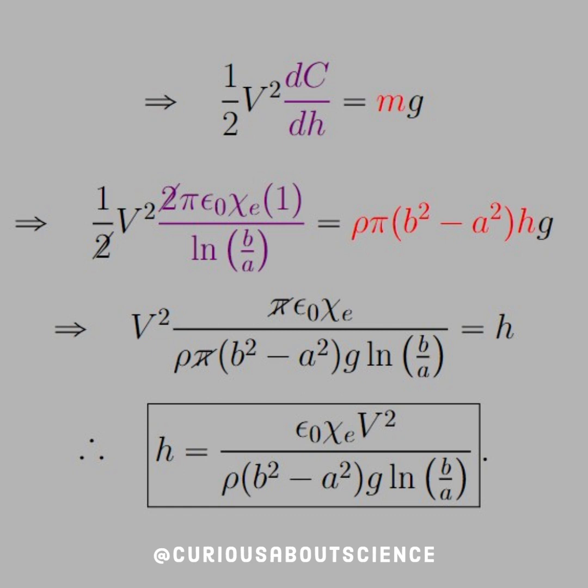All that's left to do is to isolate h and cancel and simplify. That's pretty quick and easy. The pi is canceled and we're left with h equals epsilon naught chi E times V squared all over rho times b squared minus a squared times g times the ln of b over a. Pretty freaking cool.